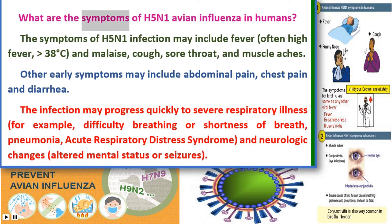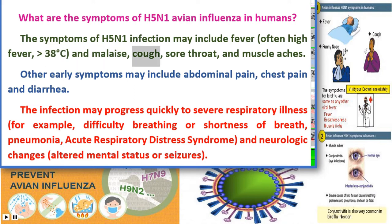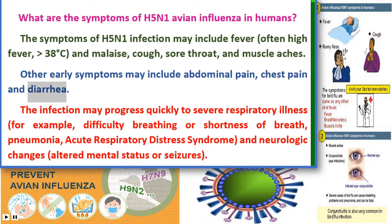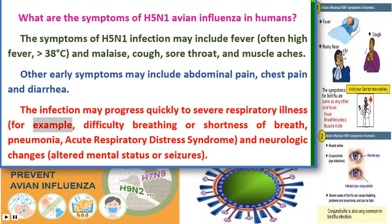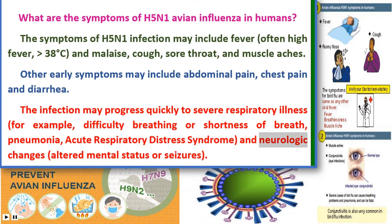The symptoms of H5N1 infection may include fever — often high fever of 38 degrees Celsius — malaise, cough, sore throat, and muscle aches. Other early symptoms may include abdominal pain, chest pain, and diarrhea. The infection may progress quickly to severe respiratory illness, for example difficulty breathing or shortness of breath, pneumonia, acute respiratory distress syndrome, and neurologic changes such as altered mental status or seizures.